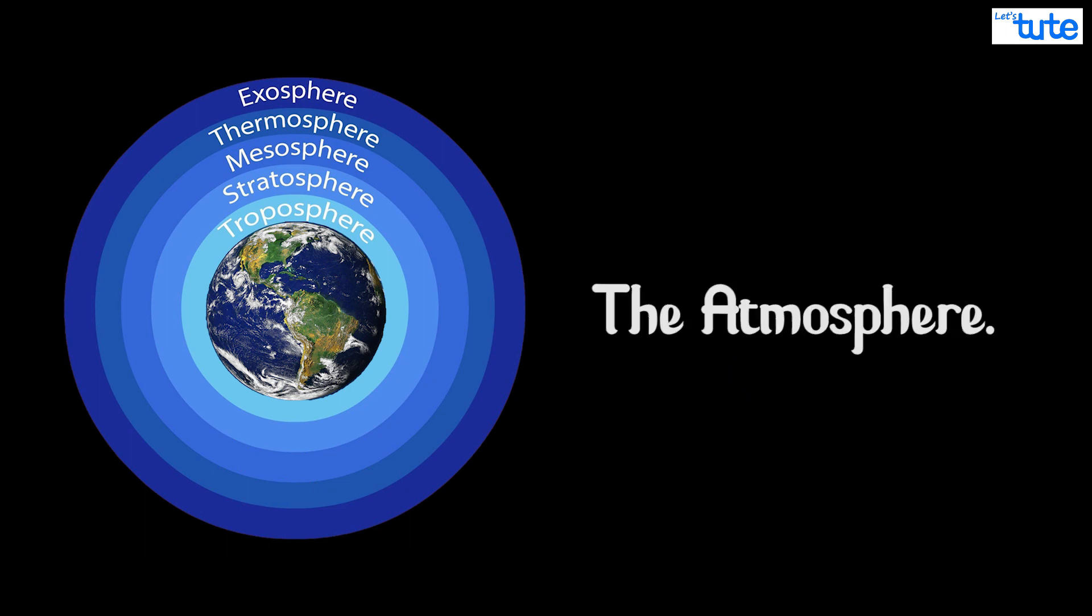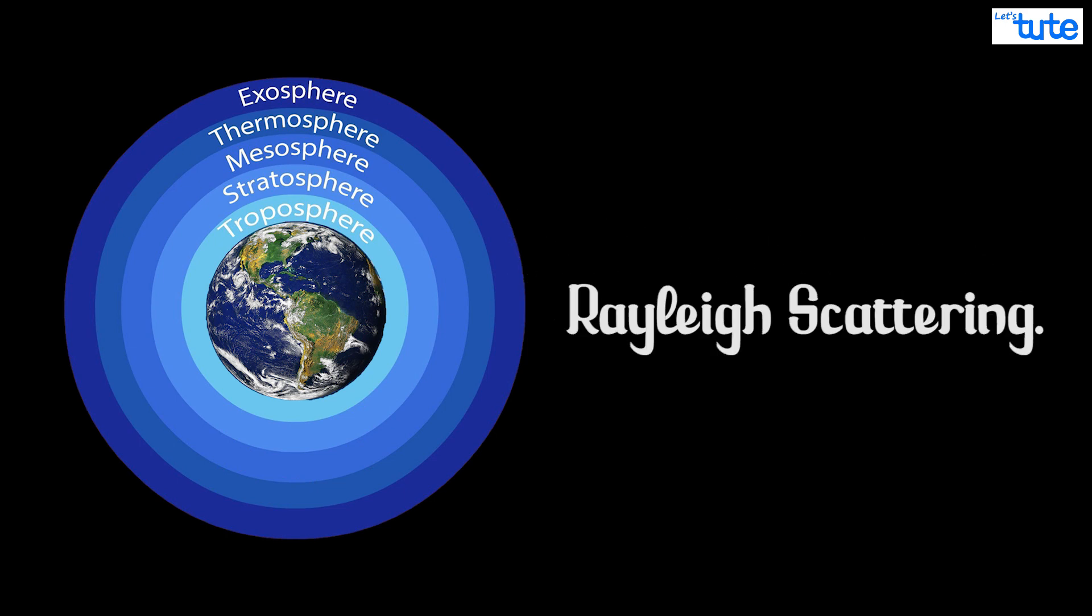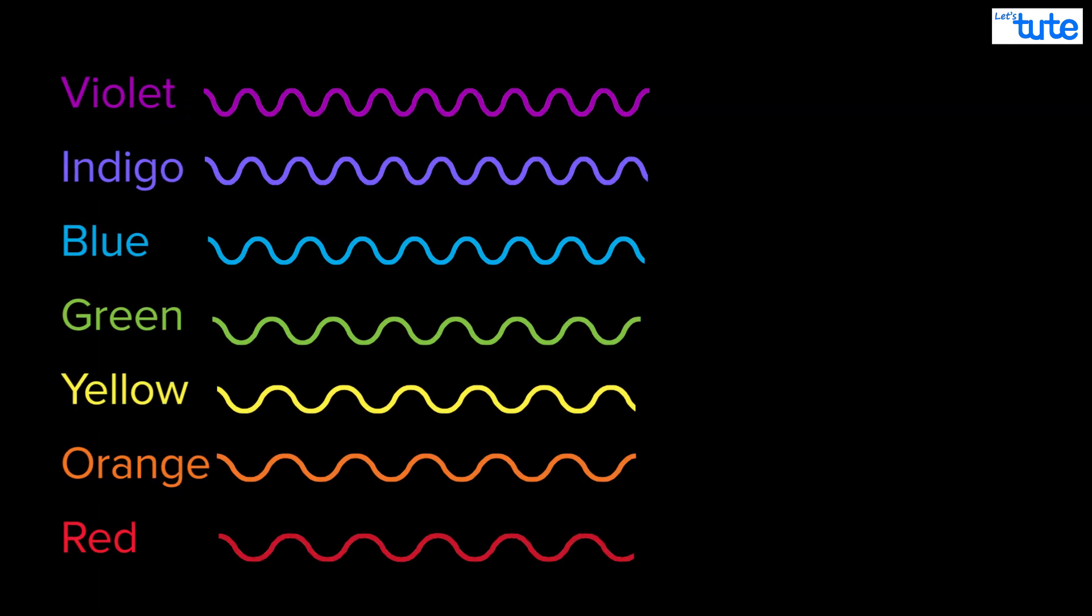Now that we know this, we can use the concept of Rayleigh scattering. See, when you see light of different colors, what you are perceiving is light of different wavelengths.